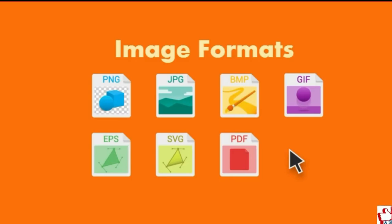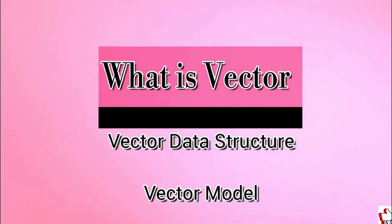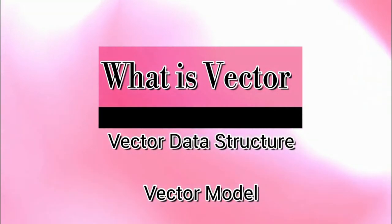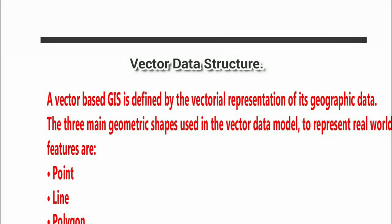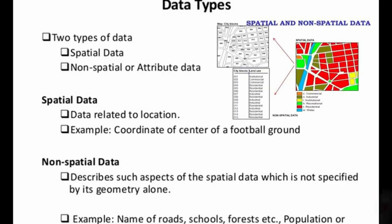Now, next is the vector data structure. Vector data is also known as the vector data structure model or the vector data model. The vector data structure model has three geometric shapes: point, line, and polygon. The metadata about point, line, and polygon is known as the non-spatial data structure. Vector data structure is further subdivided into two categories: spatial data structure, and non-spatial or attribute data structure.